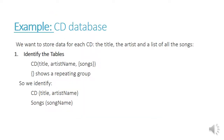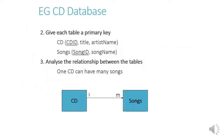Another example is a CD database. We want to store data for lots of CDs — the title, the artist, and the list of all the songs. If we identify the tables, the un-normalized CD has title, artist name, and songs shown in curly brackets because it's a repeating group. We split it into two tables: CD with title and artist name, and songs with song name. We give each table a primary key: CD ID for the CD table and song ID for the songs table. Analyzing the relationship, one CD can have many songs.